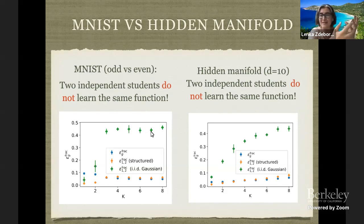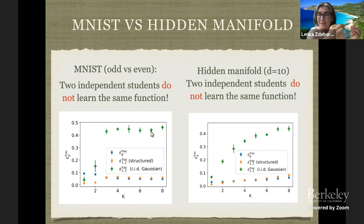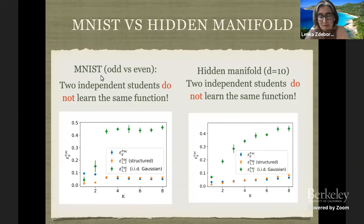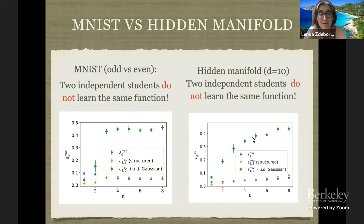That's pretty amazing: already with three hidden units, this simple neural network is able to figure out that on the sub-manifold on which MNIST lives it should learn the function — and not outside it. That's telling you something: thinking about learning the function on the whole input space is a wrong concept, because you're not learning it on the whole input space. This is something we didn't manage to reproduce with the simple teacher-student model, but with the hidden manifold model you reproduce exactly this kind of behavior.